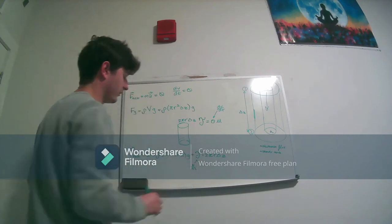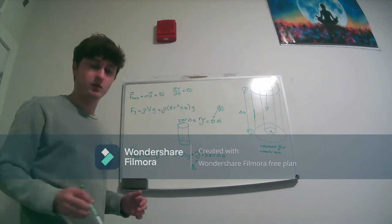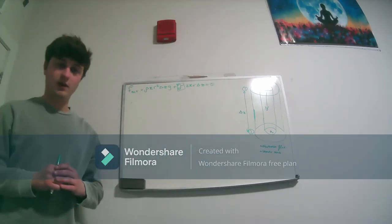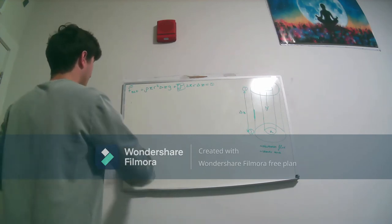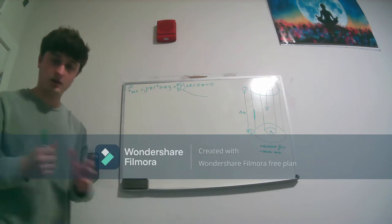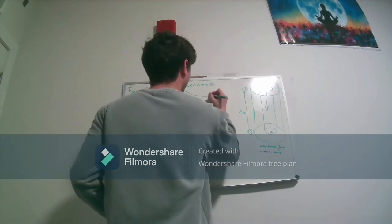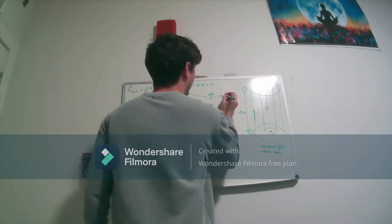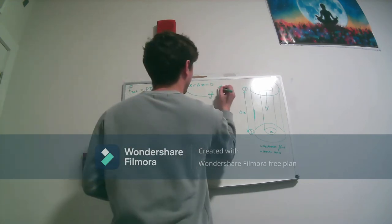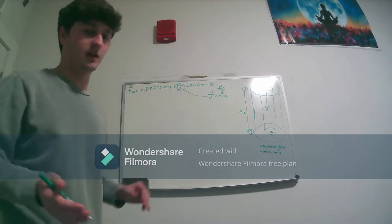We're going to substitute in for tau. We said that tau is going to be equal to the shear rate multiplied by the viscosity of our fluid, and our shear rate can be written as the differential change in velocity over the differential change in radius, dv/dr. So we substitute this in and put everything together in one step.